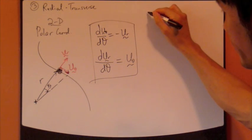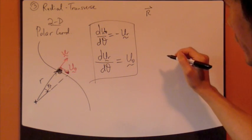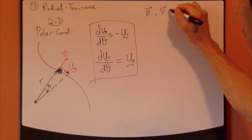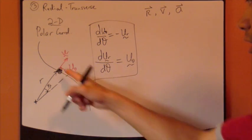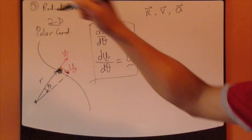The position r, the velocity v, and acceleration a of this particle using this coordinate system.